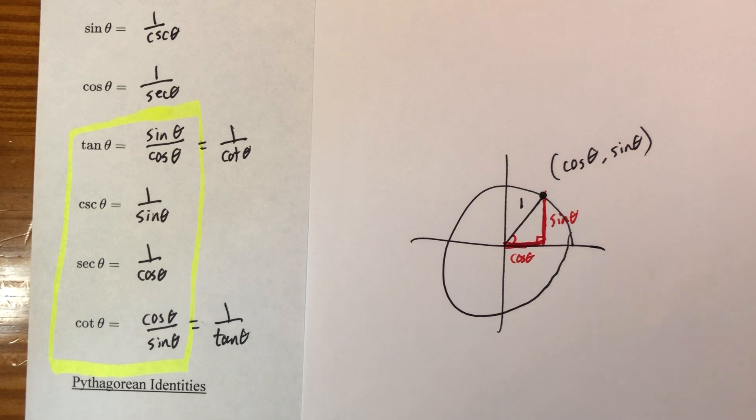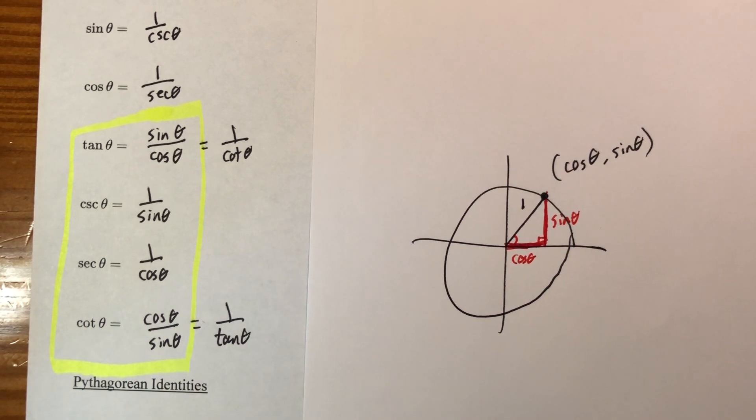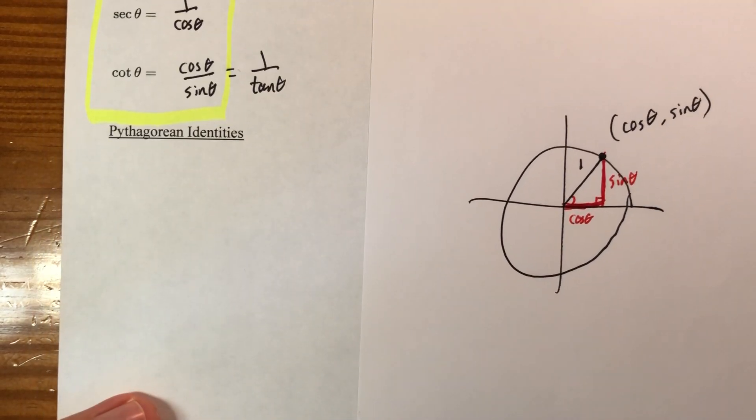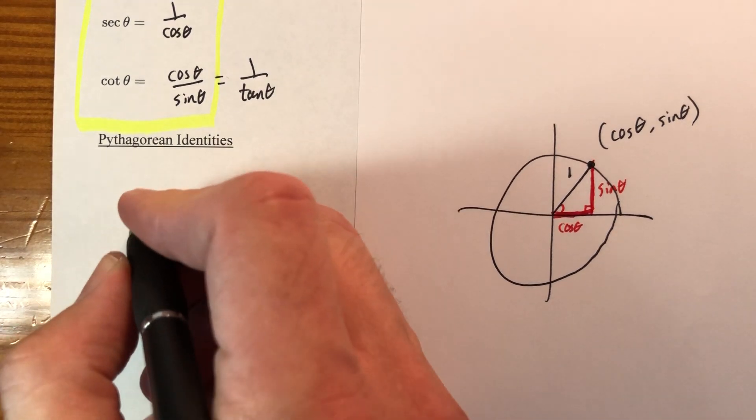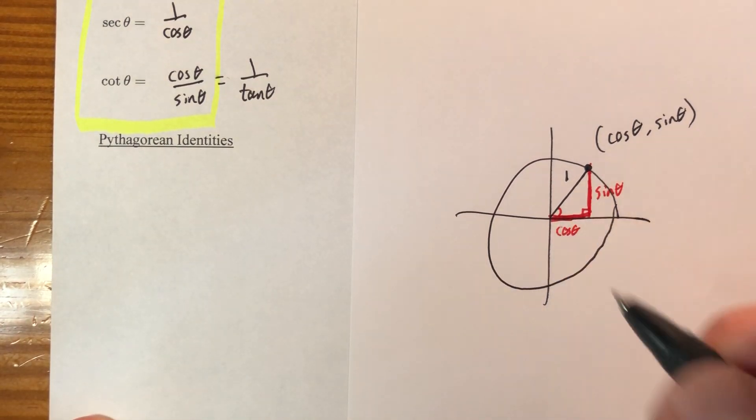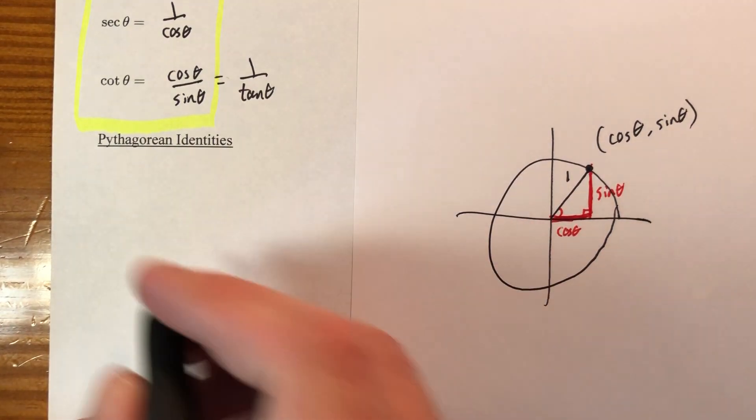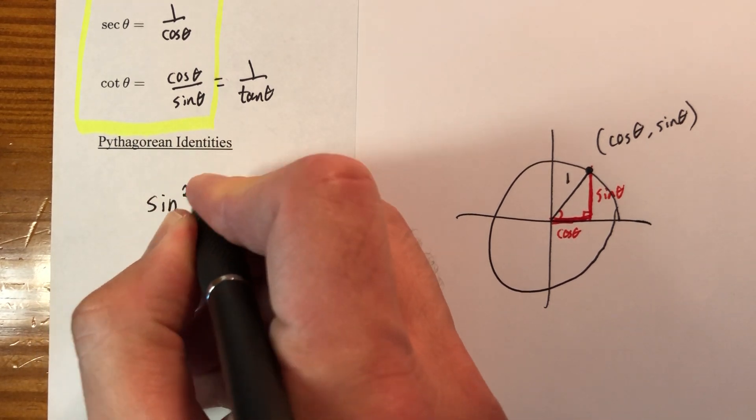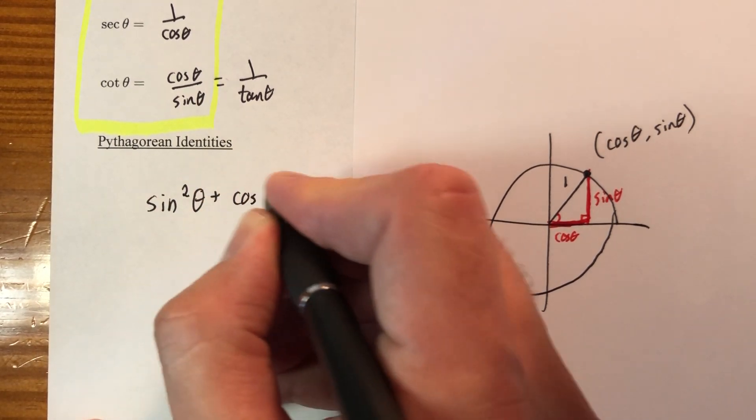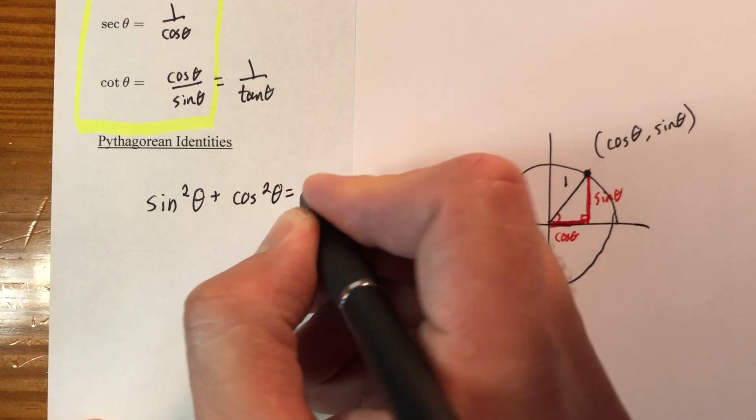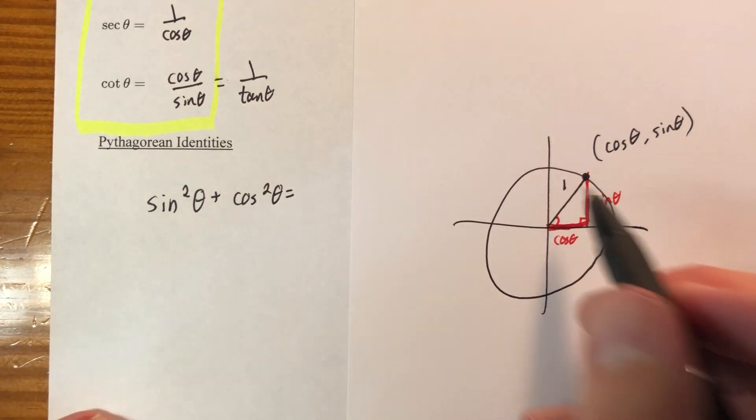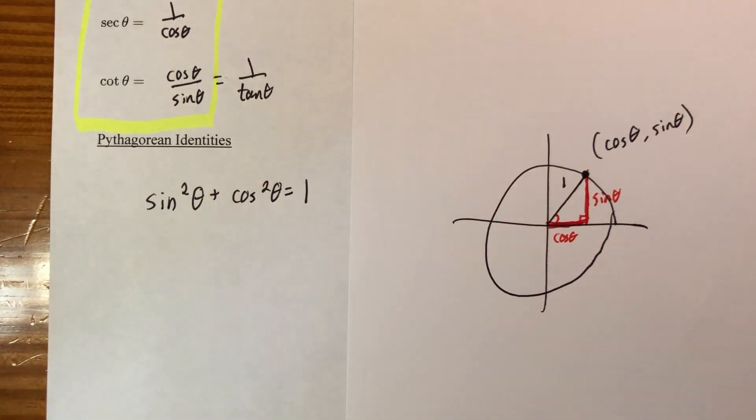If I wanted to look at that long and hard enough and start thinking about ancient Greek mathematicians, then I could probably come up with this idea. A squared plus B squared equals C squared. Pythagorean theorem. Sine squared plus cosine squared equals one squared. Well, one squared is just one. There you go.